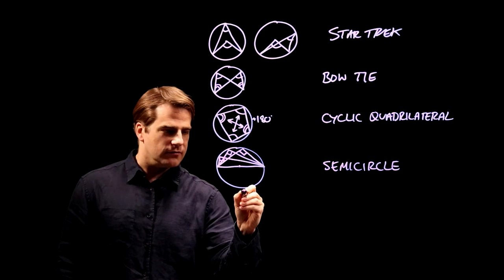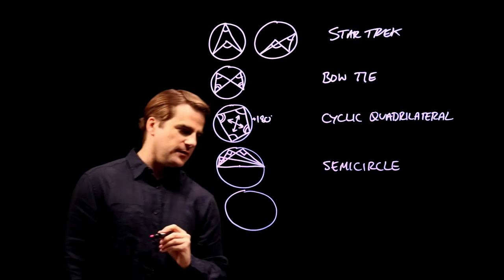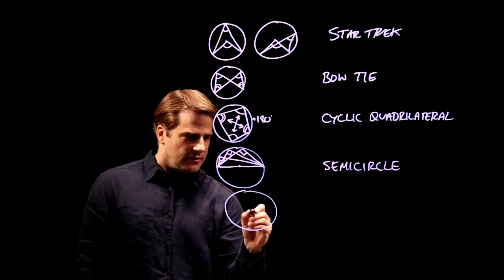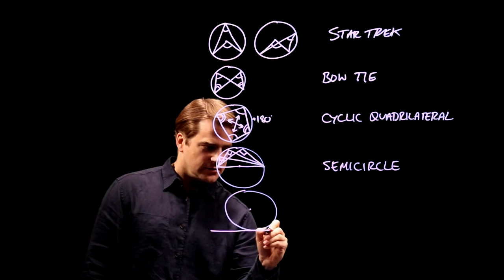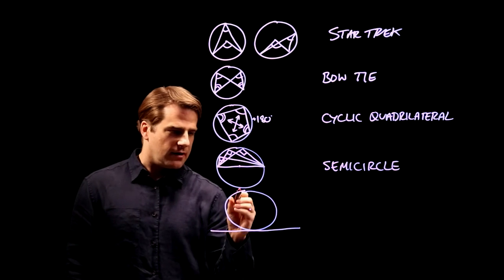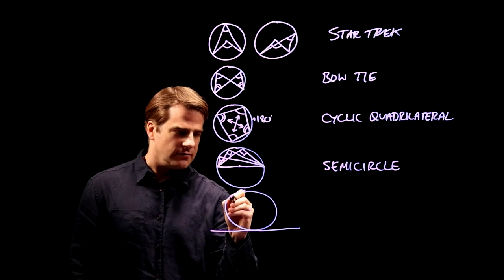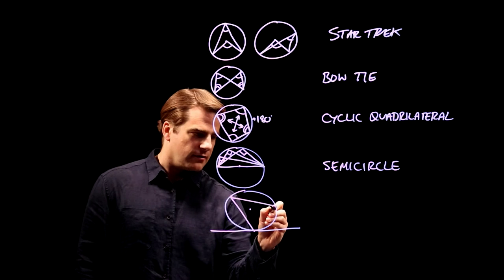And finally, the Alternate Segment Theorem. It's not a great circle, but it's okay. So if you have a tangent touching the circle like that, and any two points on the edge joined up like this.